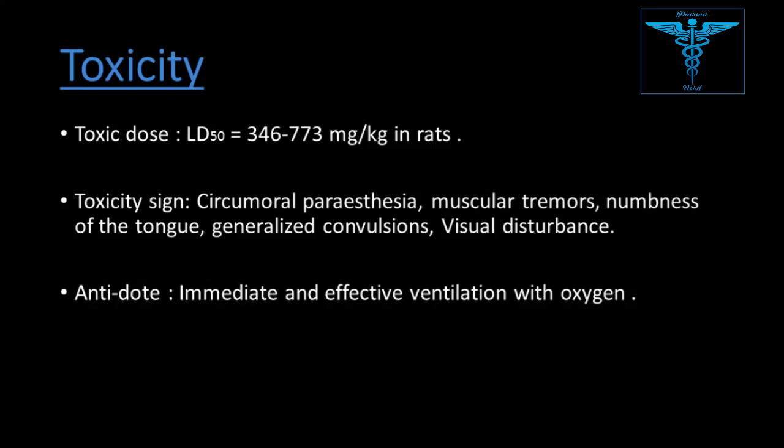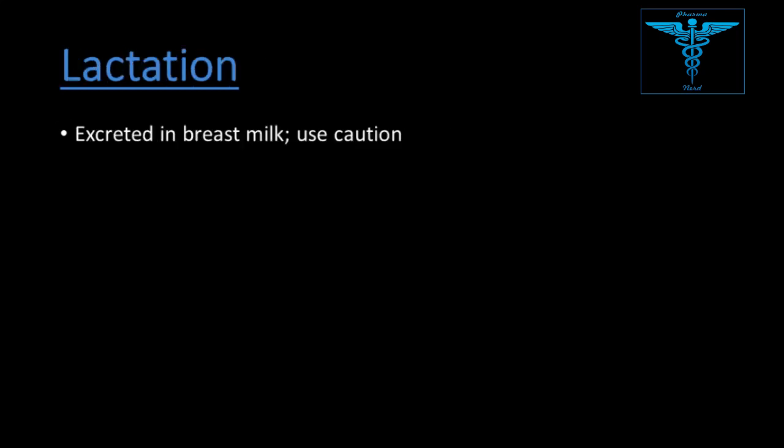Toxic dose LD50: 346 to 773 mg/kg in rats. Toxicity signs include circumoral paresthesia, muscular tremors, numbness of tongue, generalized convulsions, and visual disturbances. Antidote: immediate and effective ventilation with oxygen. Pregnancy category B. Excreted in breast milk — use with caution during lactation.